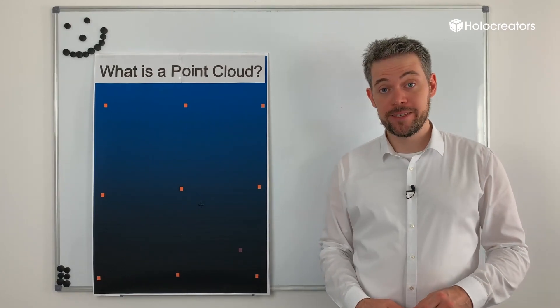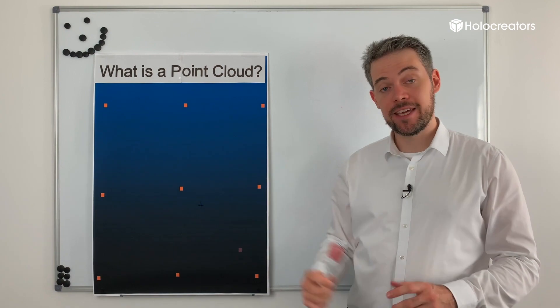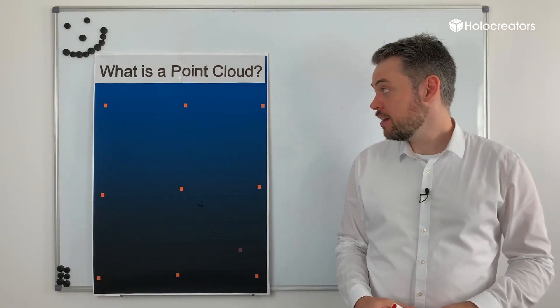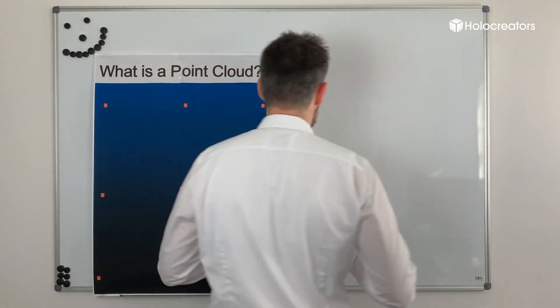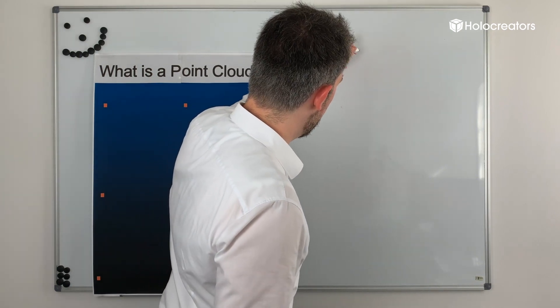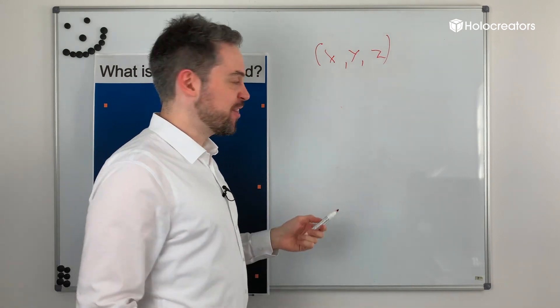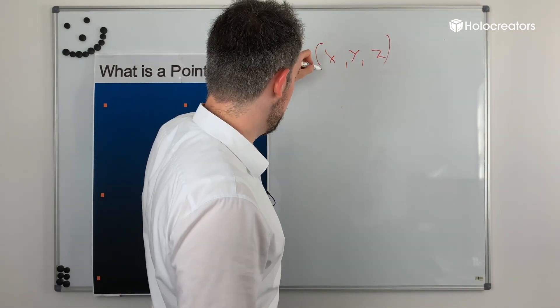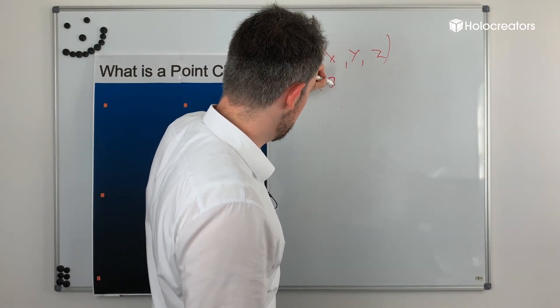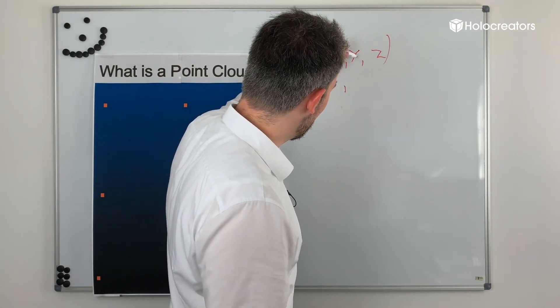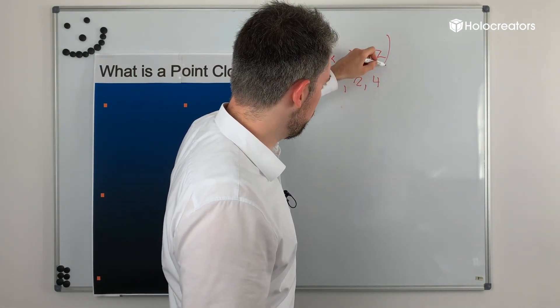If we now look at one point in particular, this contains several measurements. Always in there are the X, Y, and Z values. You probably remember that. Let's say, for example, X is 3, Y is 2 and Z is 4.